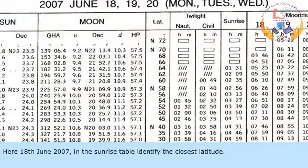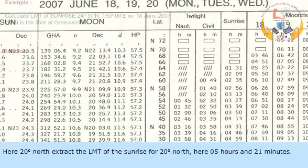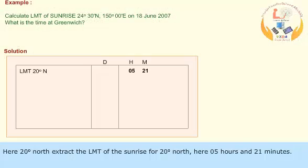Here, 18th June 2007. In the sunrise table, identify the closest latitude — here, 20 degrees north. Extract the LMT of sunrise for 20 degrees north. Here, it is 05 hours and 21 minutes.